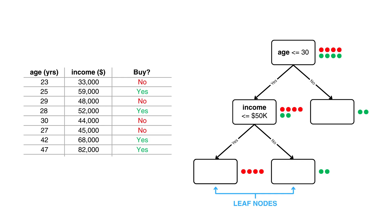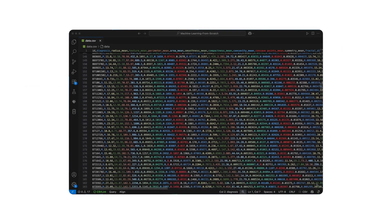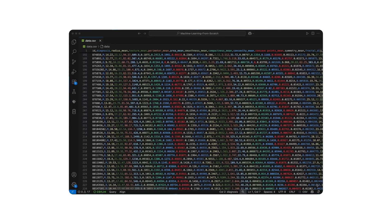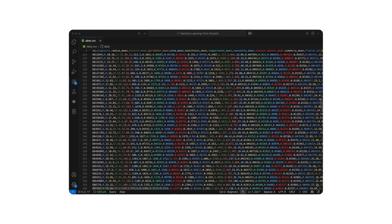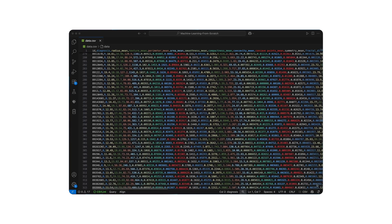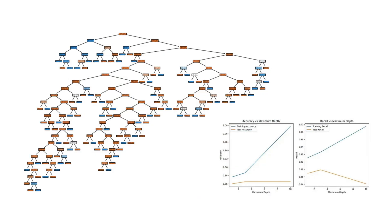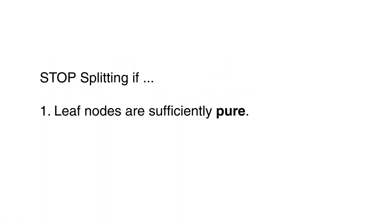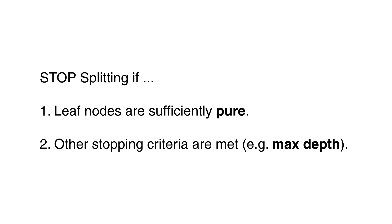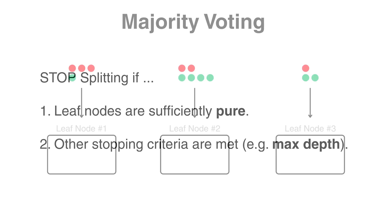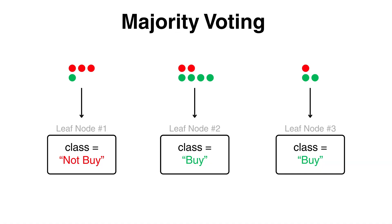A new data point or customer that ends up reaching this leaf node would simply be predicted to buy the product, because all the training examples in that node belong to the buy class. Now in larger datasets, it's not always possible or even desirable for every leaf node to be completely pure. If we force the tree to keep splitting until each leaf had only one class, the model could become too complex and end up overfitting the training data. So instead, we typically stop when the leaf is sufficiently pure, or when other stopping criteria are met, and the prediction is made using majority voting — the leaf simply assigns the class that appears most often among the samples in that node.